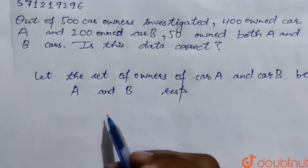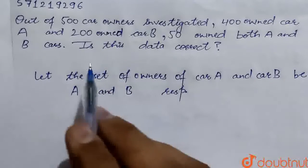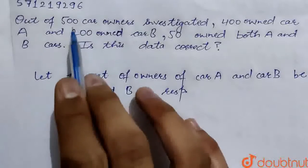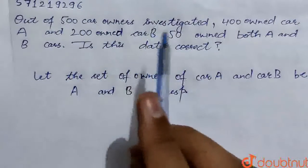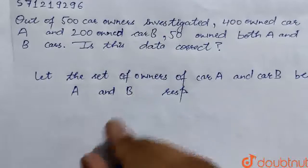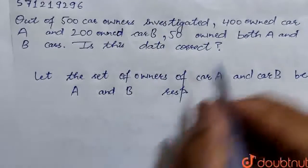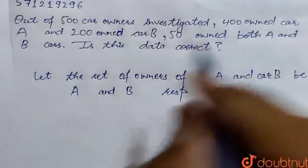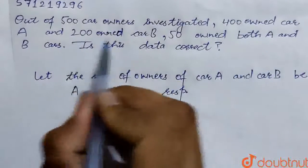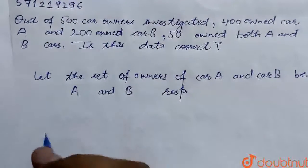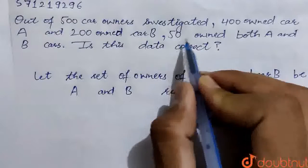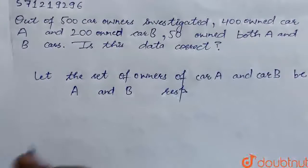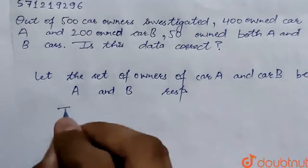So, what we are given: the total number of car owners investigated is 500. The number of people who own car A is 400, who own car B is 200, and the number of people who own both car A and B is 50.